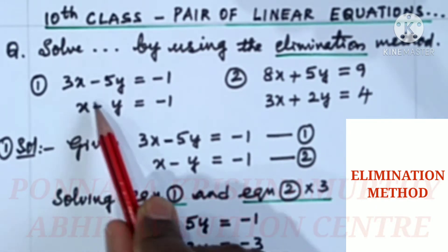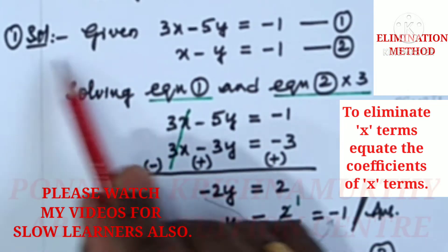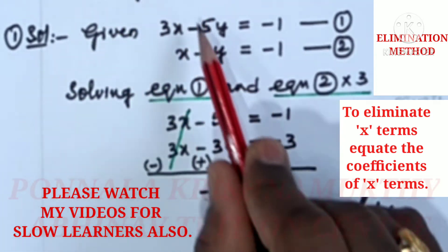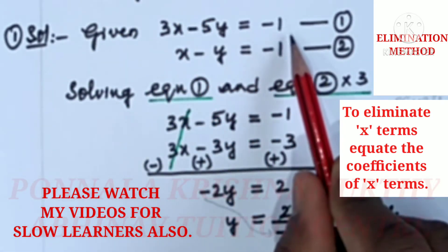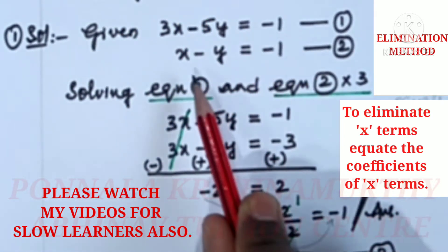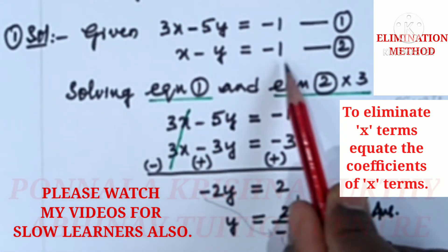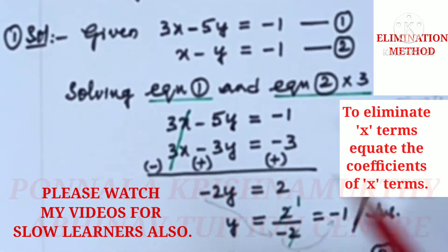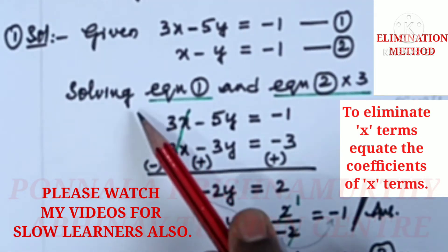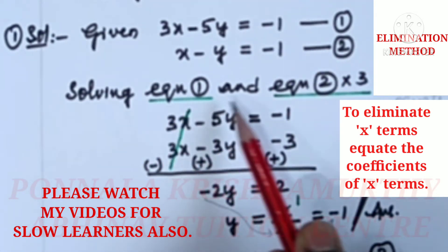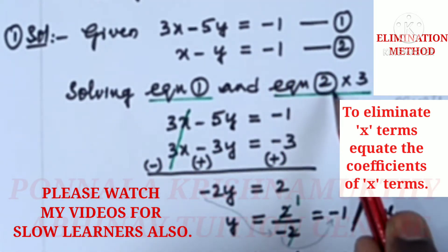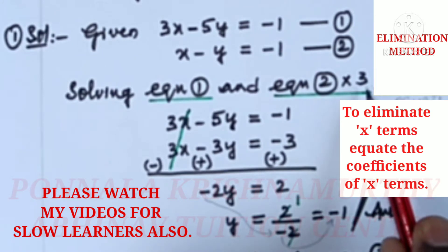Here we have two sums. First one: given 3x minus 5y equal to minus 1, and x minus y equal to minus 1. Solving equation 1 and equation 2 multiplied by 3.